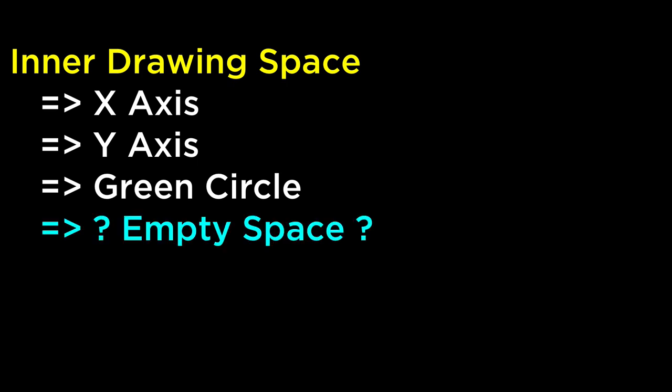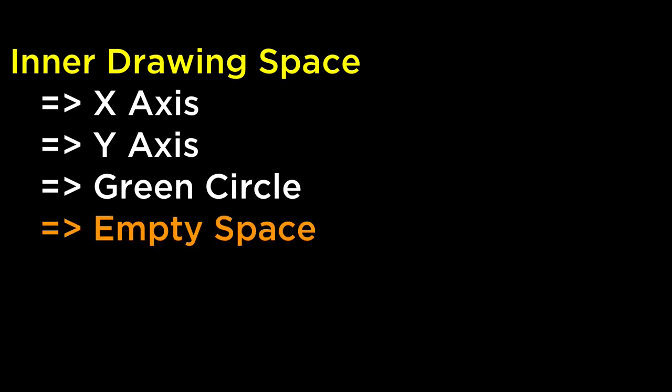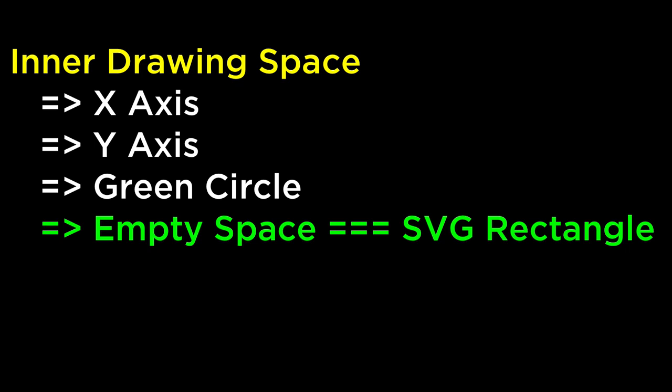Did you notice what was missing? The empty space between the elements is not a child element of the inner drawing space, which means it does not have the zoom behavior attached to it, which also means we will not be able to zoom in, zoom out, or pan by interacting with it. So the solution is to make the empty space a child element of the inner drawing space. What we want to do is create an SVG element that will act as the empty space between the elements. The solution is to make an SVG rectangle that behaves like the background of the whole visualization.